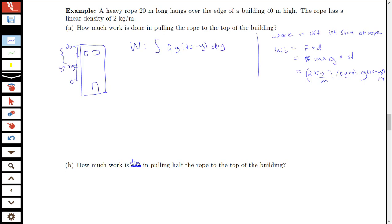The bounds are 0 to 20 since we're lifting the whole rope. We pull out the constants 2g in front of the integral, and the antiderivative of (20 minus y) is 20y minus y squared over 2, evaluated from 0 to 20.